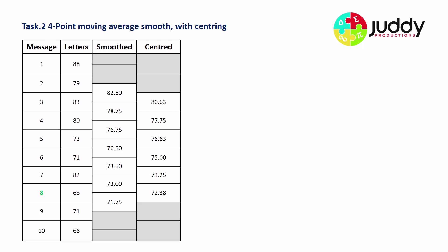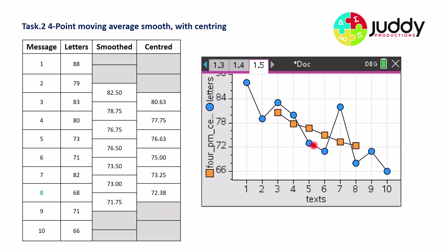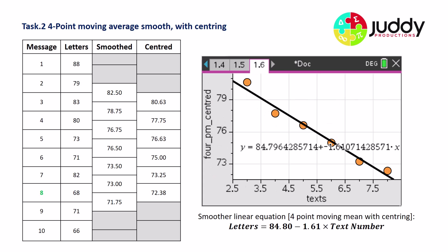Our completed four-point table shows original values, smooth data, and centered data. The graph shows the original blue data and the gold four-point moving average smooth with centering — a very straight line that has eliminated much of the variation, improving linearity. The linear regression equation is: letters = 84.80 − 1.61 × text number.